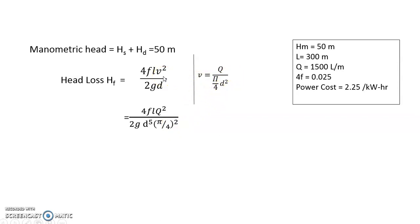Just that we have substituted Q by π/4 d² for velocity here. So for 4f being 0.025, L equals to 300 meters, and Q is 1500 liters per minute. Again convert this to meter cube per second: 1500 liters is 1.5 meter cube per minute, just converted into seconds. So hf in such a way calculated is hf equals to 38.77 meters.